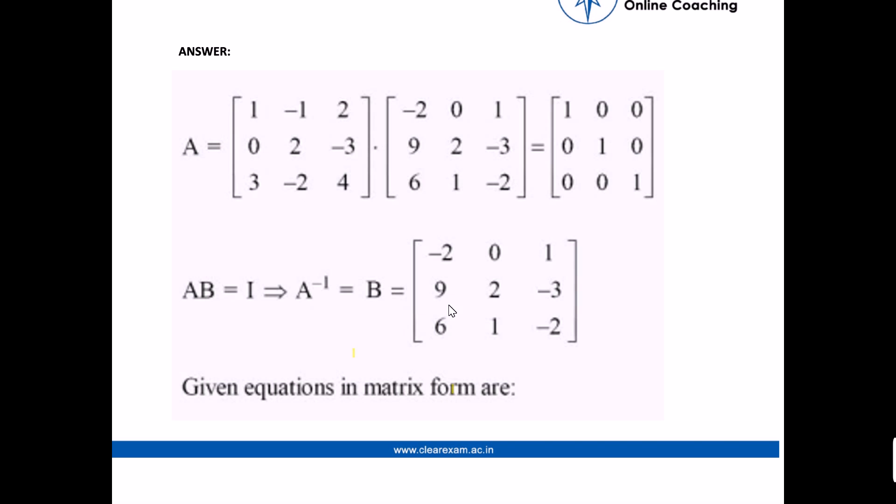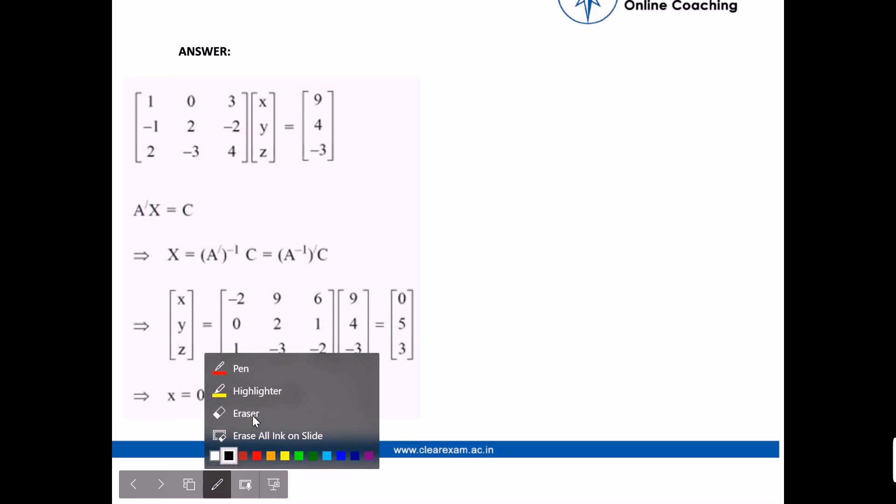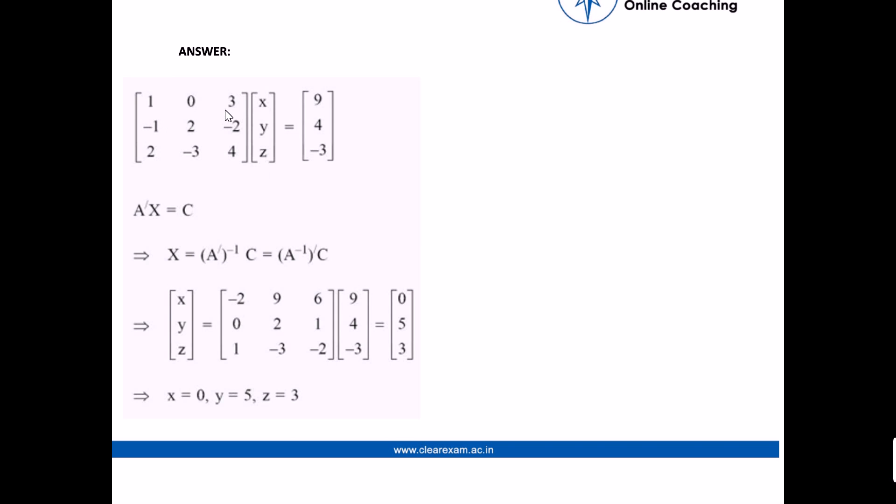The matrix form will be: the coefficient matrix is [1, 0, 3; -1, 2, -2; 2, -3, 4]. And we can write it as matrix times [x; y; z] equals [9; 4; -3]. This is the equation given.